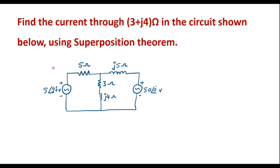In this video, let me consider one numerical on superposition theorem. Find the current through 3+j4 ohm in the circuit shown below using superposition theorem. This is the given circuit. Here we have a 3+j4 ohm resistor, and we are supposed to find the current through this resistor using superposition theorem.